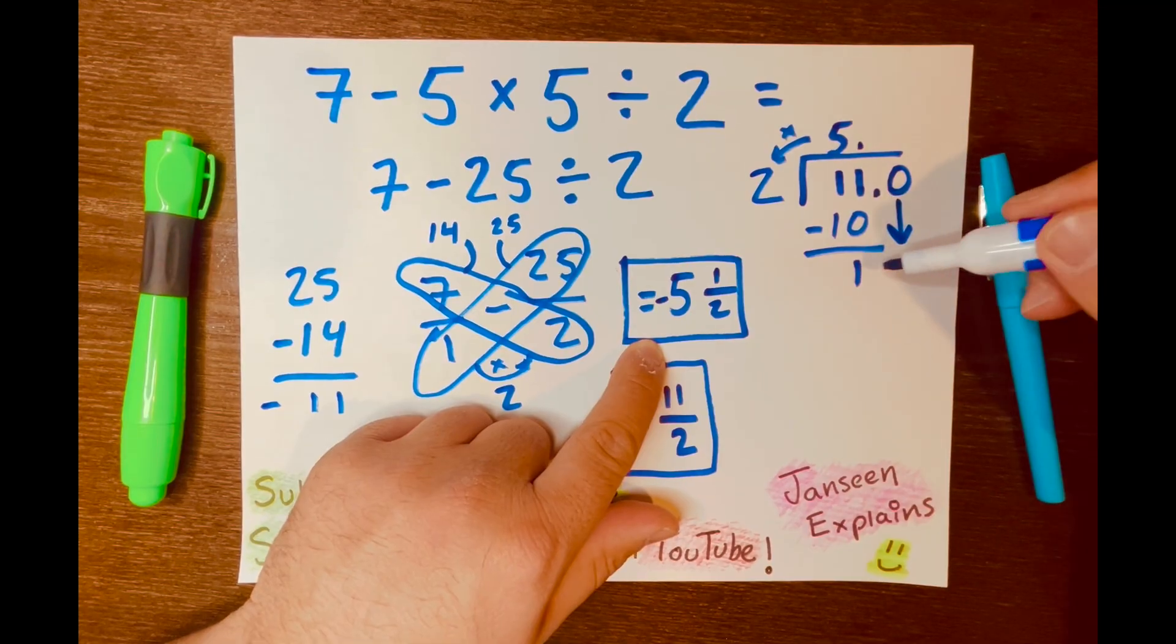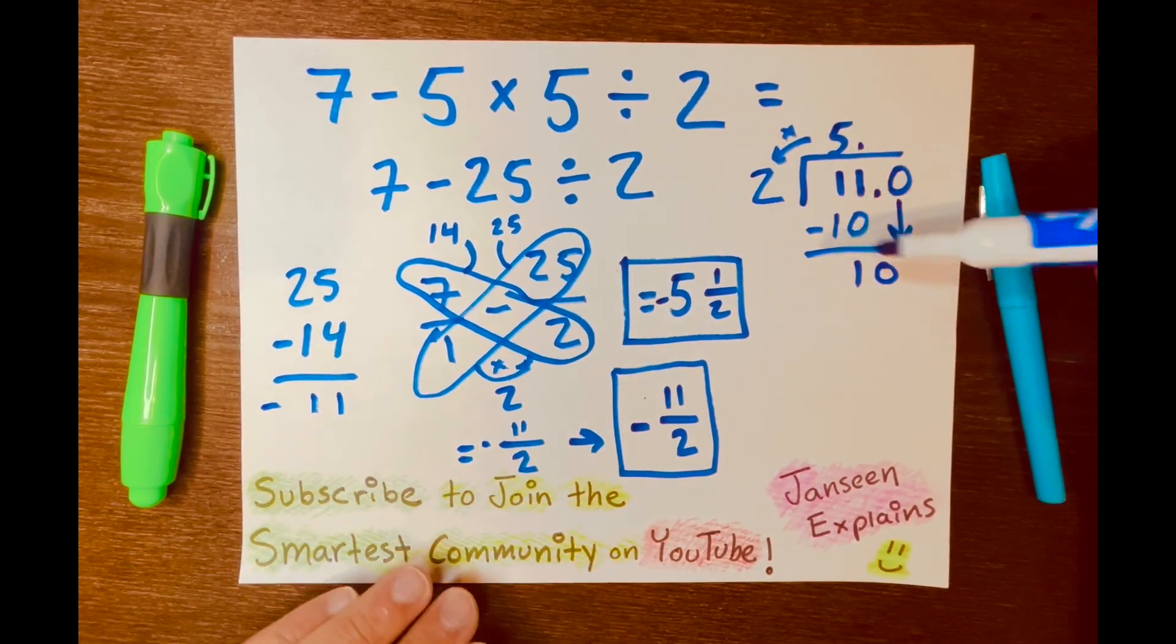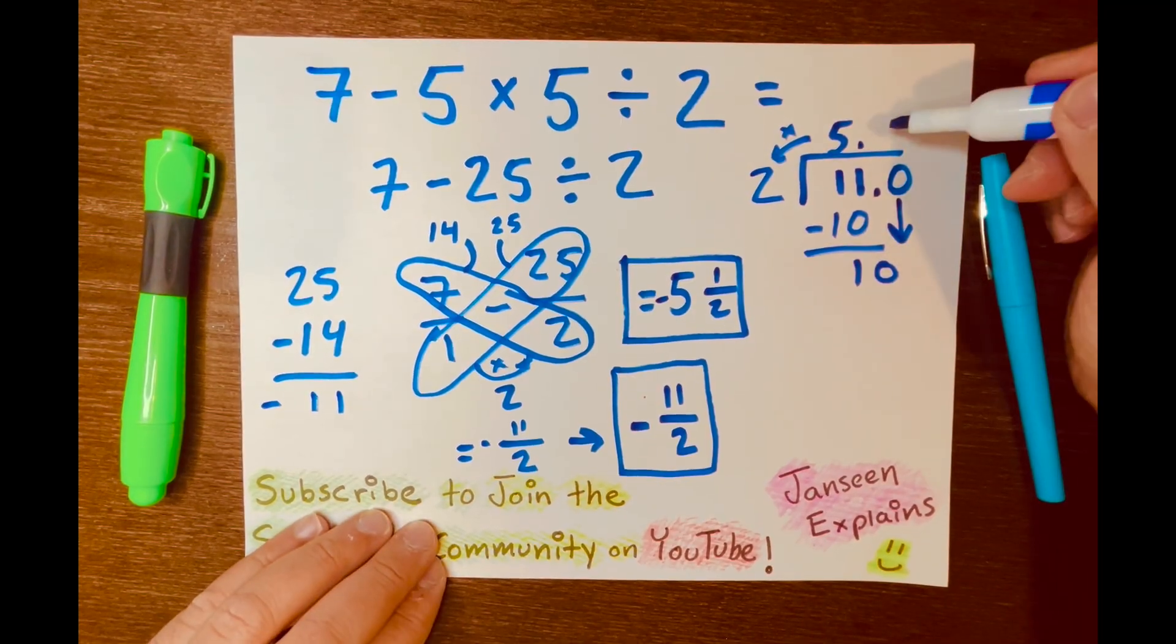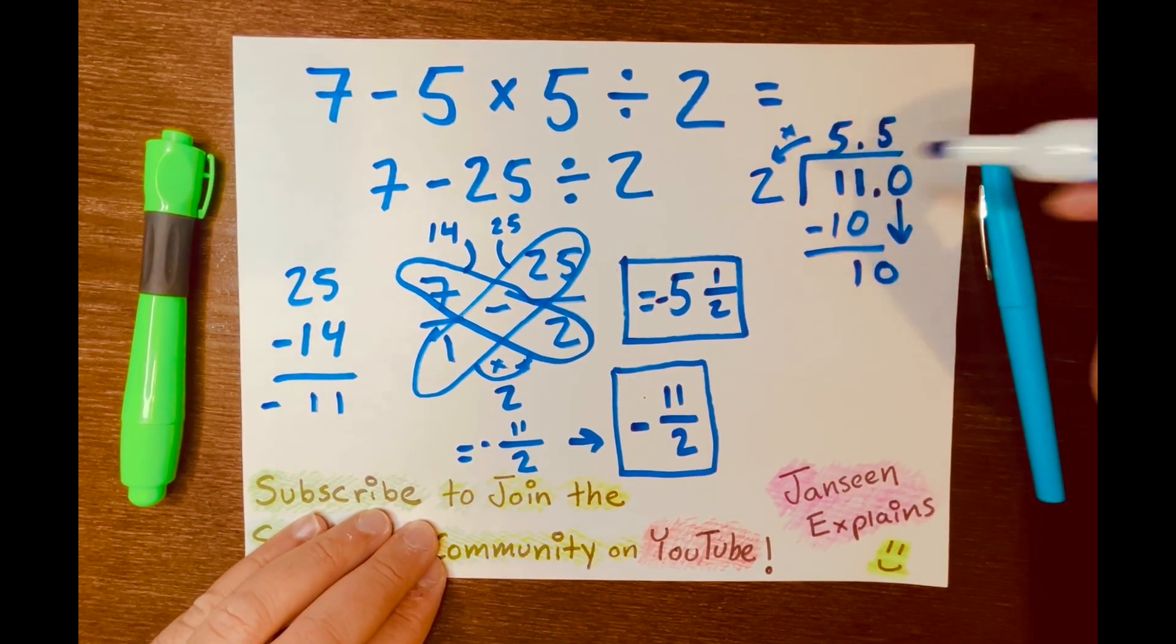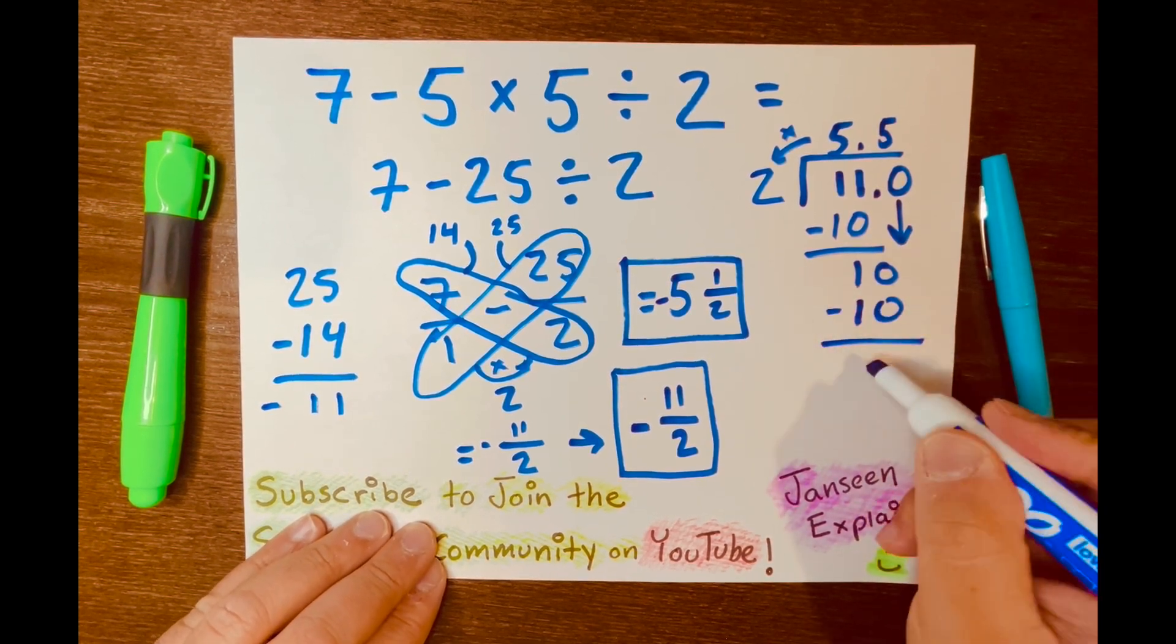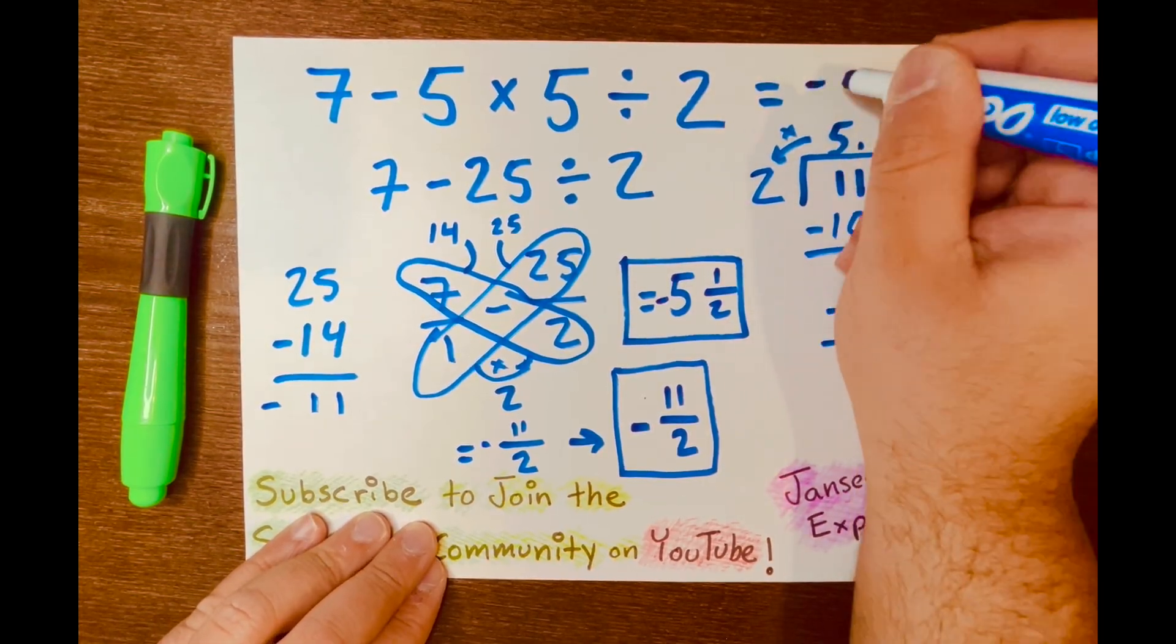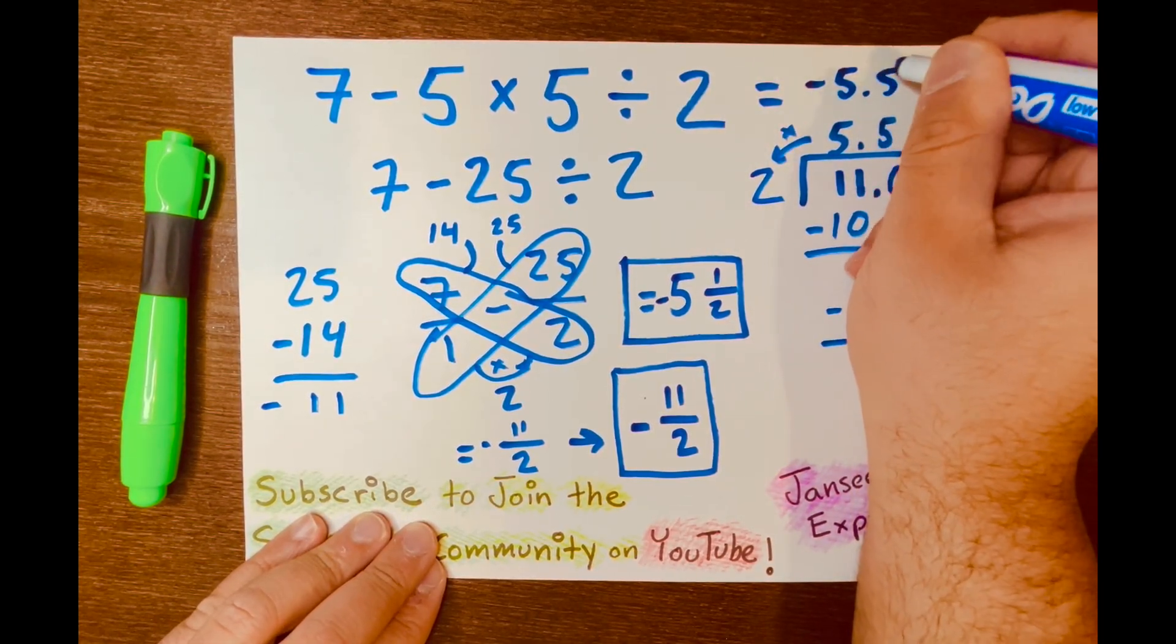Bring down the 0 down and give it to the 1. So 1 becomes 10. And how many times can 2 fit into 10? 5 times. And 5 times 2 equals 10. And we subtract 10 minus 10 equals 0. So your answer is negative 5.5.